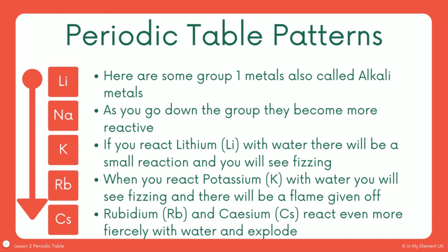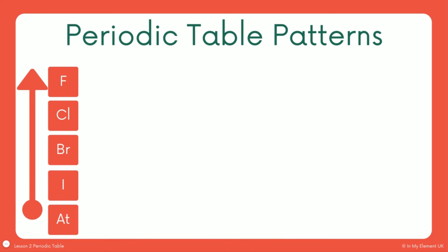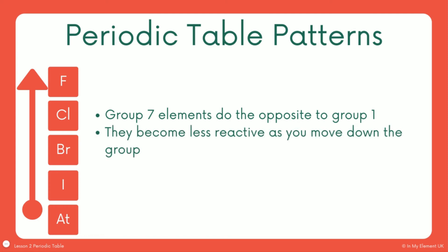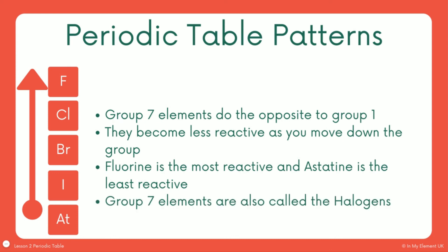That's a group one pattern. Next pattern is I've taken five elements here from group seven, the opposite end of the periodic table, and they are also known as the halogens. These elements do the opposite. Look, the arrows change direction. They become less reactive as you go down the group, which means they become more reactive as you go up the group. That's why I've changed the direction of the arrow. So fluorine is the most reactive. And then it decreases in reactivity as you go down the group. They're also known as the halogens.